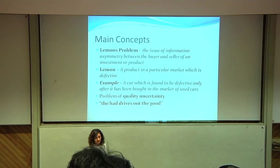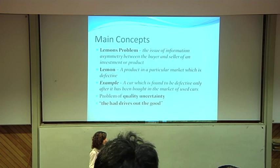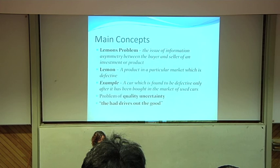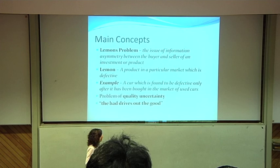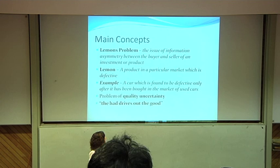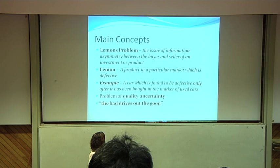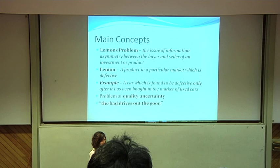Before I start, I'll explain some main concepts in Akerlof's paper. Akerlof uses asymmetric information as a big concept, which is where information is not evenly distributed between all parties, leading to either moral hazard or adverse selection. This gives rise to the lemons problem, where there is asymmetric information between the buyer and a seller in an investment or a product. A lemon can be said to be a product in a particular market which is defective, such as a car in an automobiles market. This gives rise to the problem of quality uncertainty. Akerlof uses the phrase 'the bad drives out the good' in a lot of the examples in his paper.